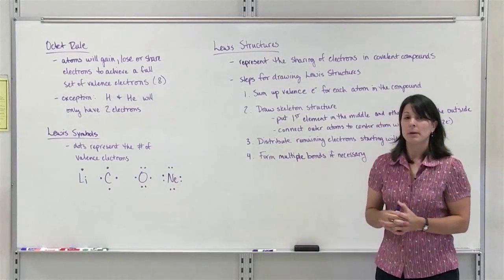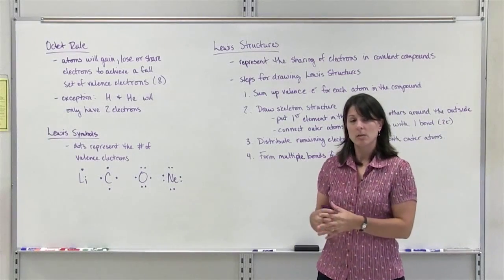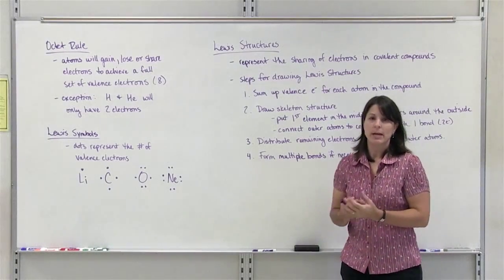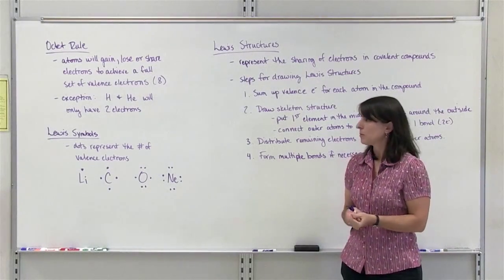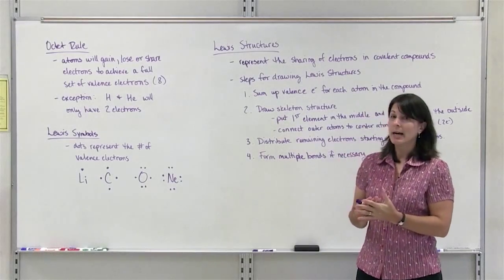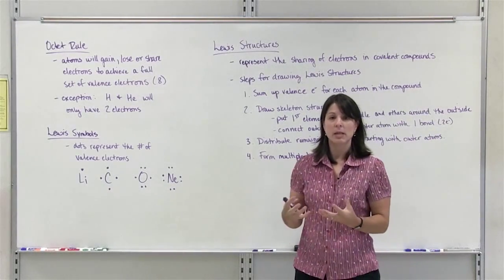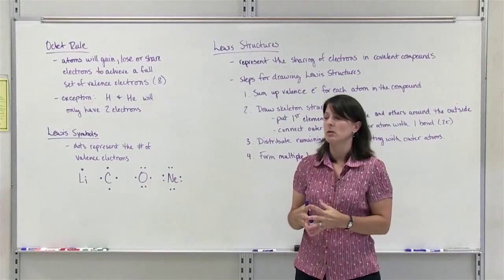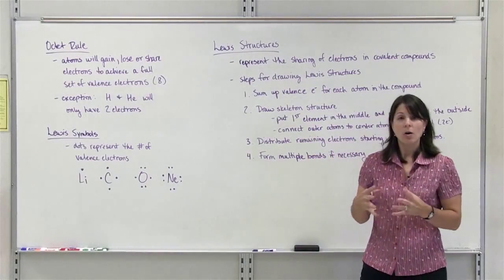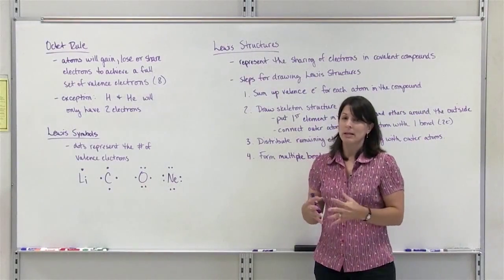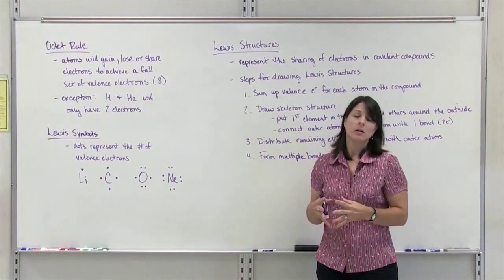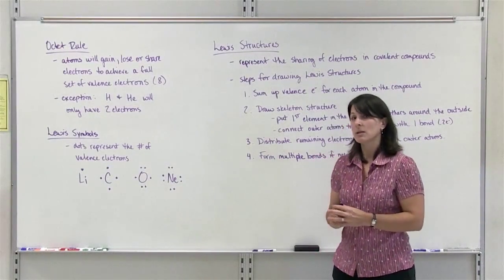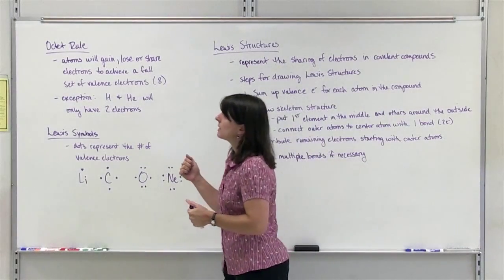If you recall from the periodic table, the noble gases, which are in group 8A, are the least reactive elements on the periodic table. They are the least reactive because they have a full set of valence electrons — they have 8 valence electrons. So all the other elements on the periodic table basically want to be like a noble gas and have 8 valence electrons, and that's where the octet rule comes in.